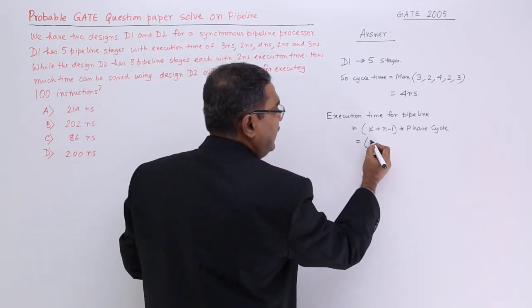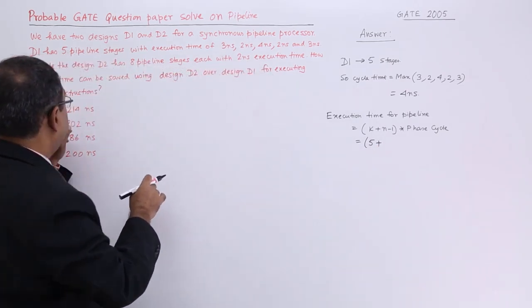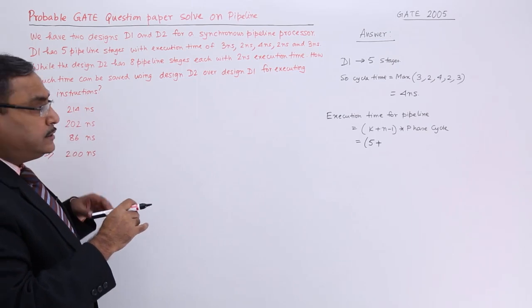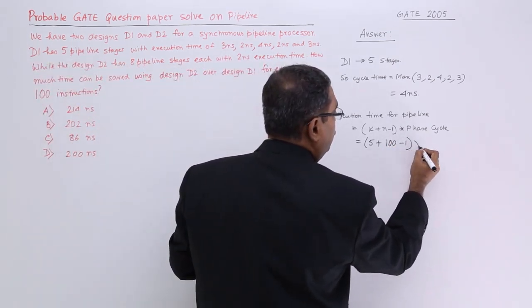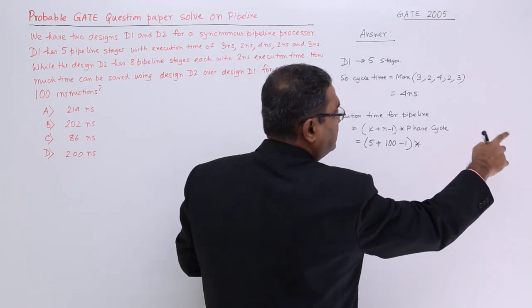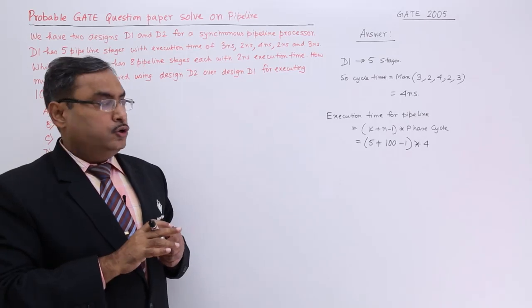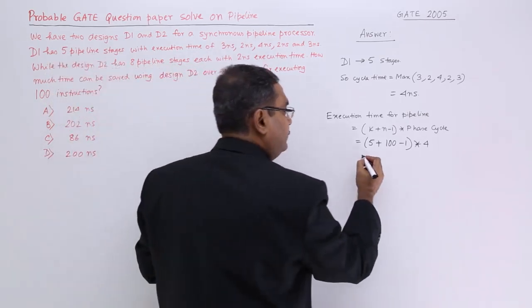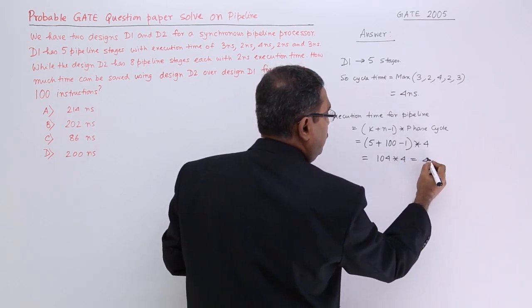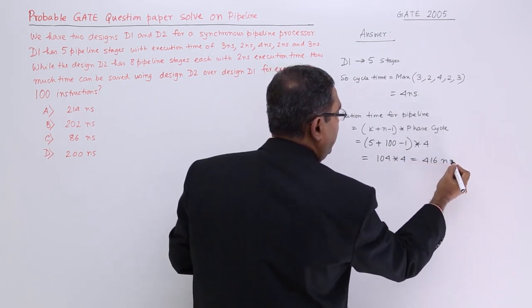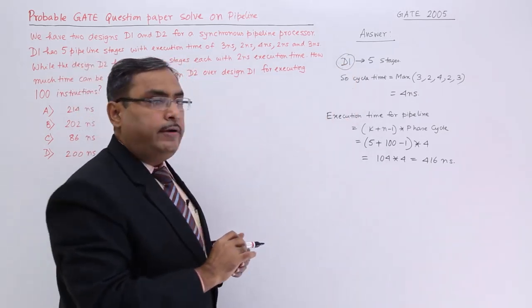Now see here K is equal to 5 stages. I think they are asking for 100 instructions. Yes, they are going to be 100 minus 1 into phase cycle. In this case, it is nothing but 104 into 4. That is 416 nanosecond in architecture D1 to execute 100 instructions.